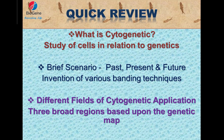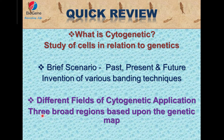Let's do a quick review of what we covered. We got to know what cytogenetics is — the study of cells in relation to genetics. We also got to know a brief scenario of what occurred in this field from the past to the present and future aspects, including the invention of various banding techniques. We also learned the different fields of cytogenetic application — three broad regions based upon the genetic map.